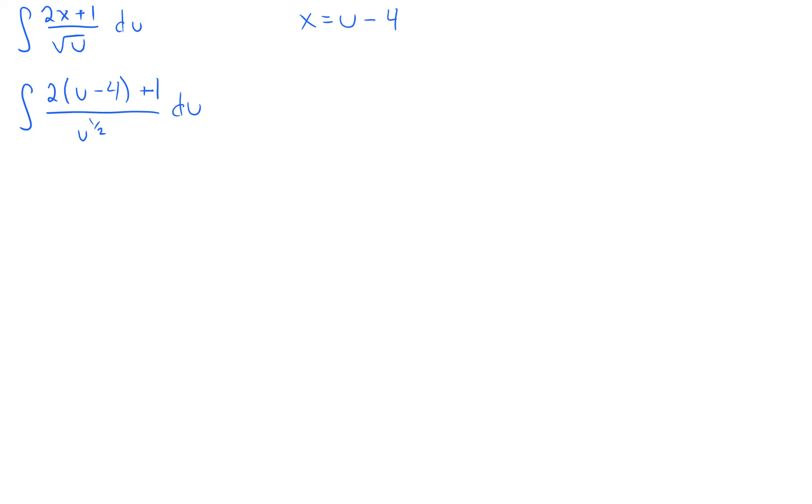So let's work on this. We now have the integral of 2u minus 8 plus 1 over u to the one half du. Actually, from here, it's pretty simple stuff. Over u to the one half. Okay, but we have this quotient. Well, whenever you can, split up your quotient. So let's split up. So we have 2u over u to the one half minus 7 over u to the one half du.